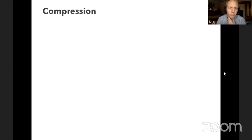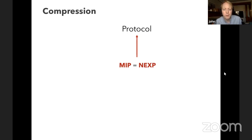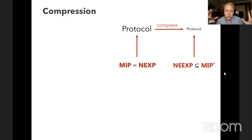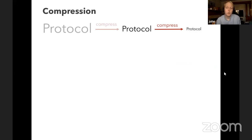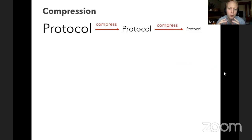Our result is essentially a compression theorem. We took the protocol from MIP equals NEXP — a big protocol with exponentially large answers and questions — applied compression ideas, and shrank it to one where all exponentials compress down to polynomials, allowing us to show NEXP is contained in MIP*. But why only do one round of compression? Instead of compressing a big protocol once, why not start from a very big protocol, compress it to a big protocol, then compress again, or do this three times or four times?